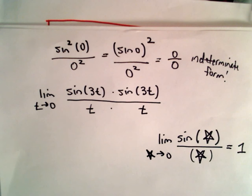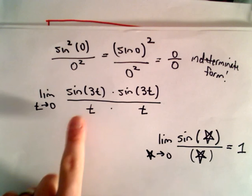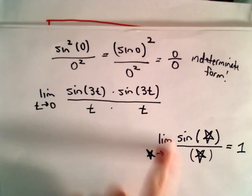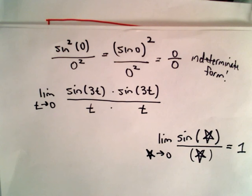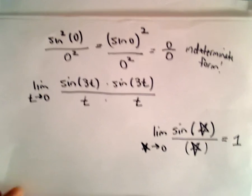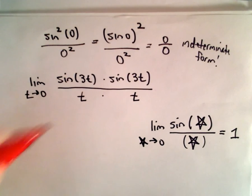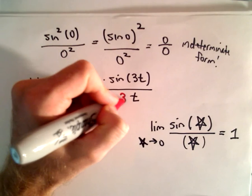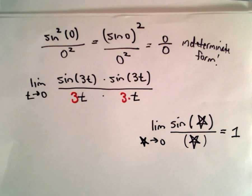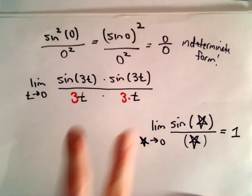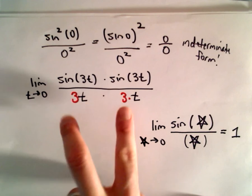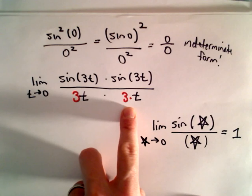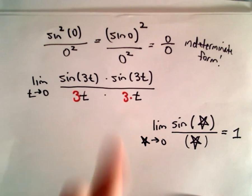In a perfect world, I would have a 3 right here and a 3 right here, and then I could use this limit result. Is there a way to make that happen algebraically? Sure — I can just multiply by 3 here and by 3 right here. But really, if you multiply this all out, we've got a 3 times a 3, so I've multiplied the denominator by 9.